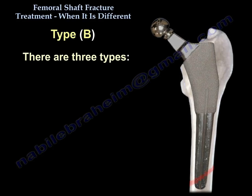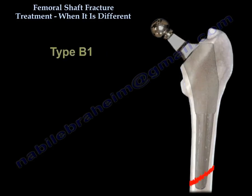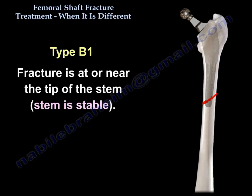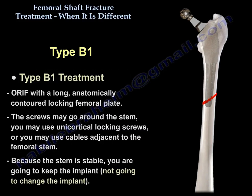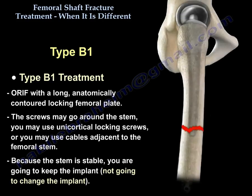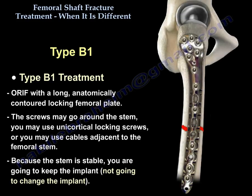Type B has three subtypes. In B1, the fracture is at or near the tip of the stem and the stem is stable. You will do open reduction and internal fixation with a long anatomically contoured locking femoral plate. The screws may go around the stem, or you may use unicortical locking screws, or you may use cables adjacent to the femoral stem. Because the stem is stable, you are going to keep the implant and not change it.